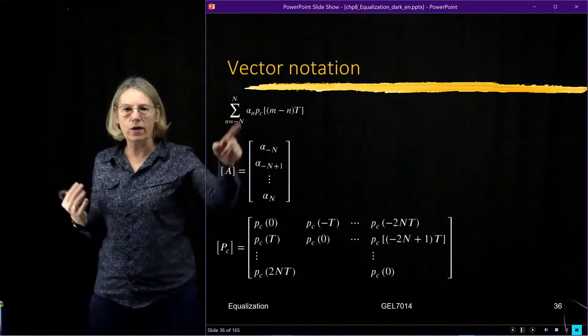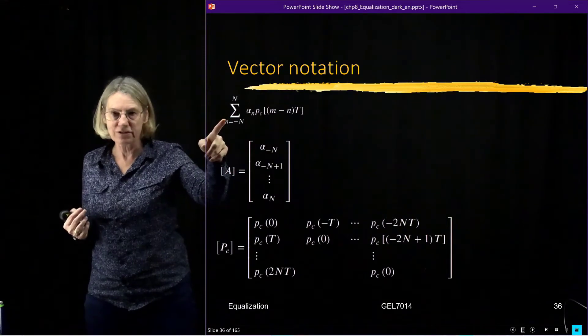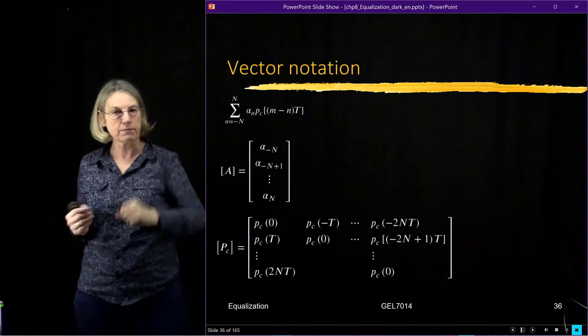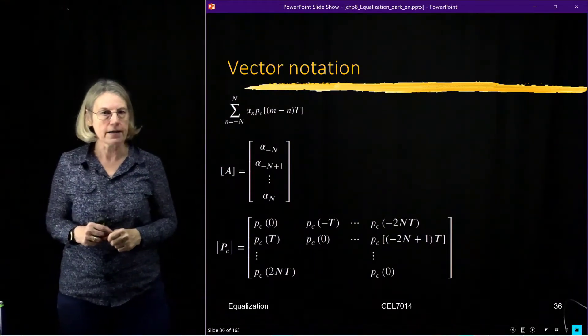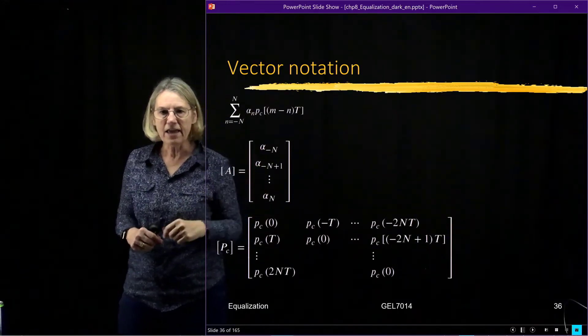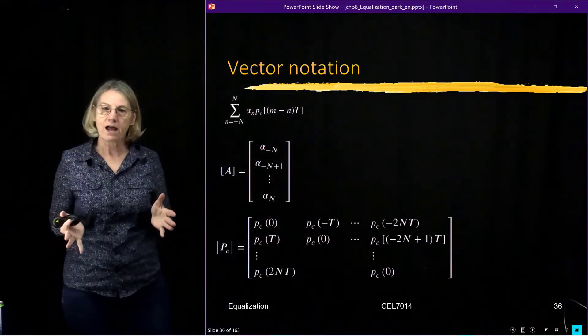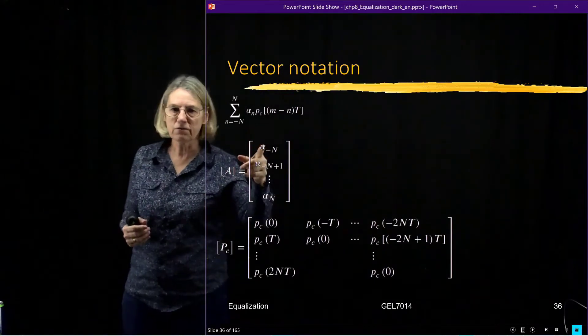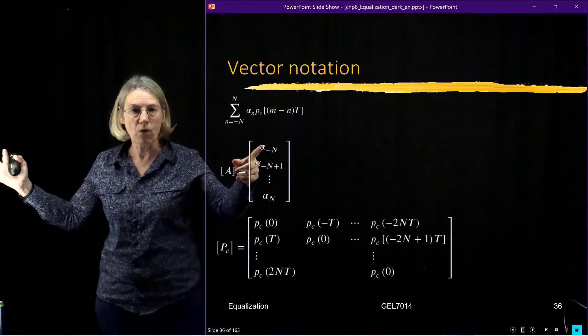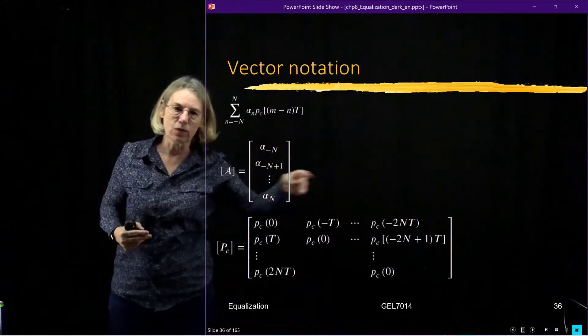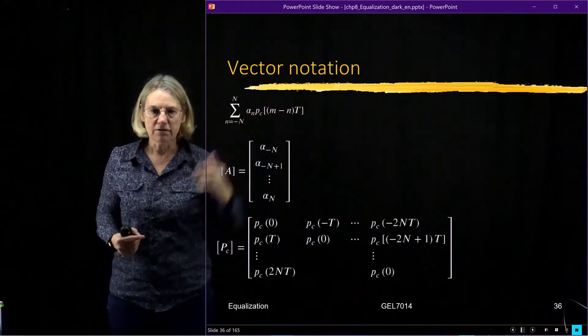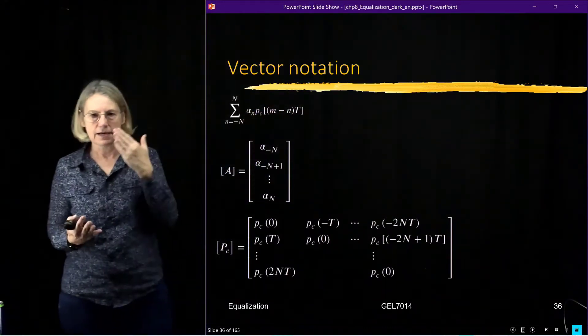So let's write this equation, the output of my equalizer, in vector notation. It'll make it much easier for us to see what's going on, how is it that I'm going to determine what those coefficients are. So I take all of the different coefficients, I gather them together in a vector. And these are the coefficients for n symbols away from the one I want, n symbols ahead to the one I want, and the one in the middle would represent the coefficient for the time of the symbol of interest.